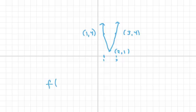f of x equals 3 times x minus 2 squared plus 1. And that's all. Thank you and have a nice day. Bye bye.